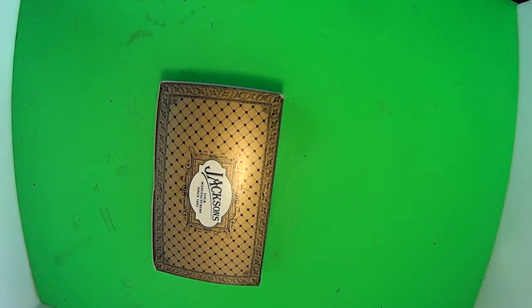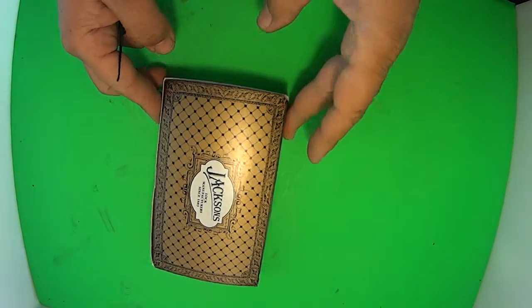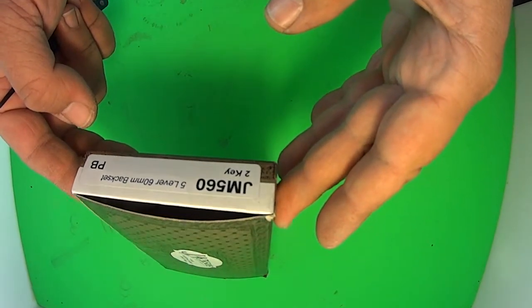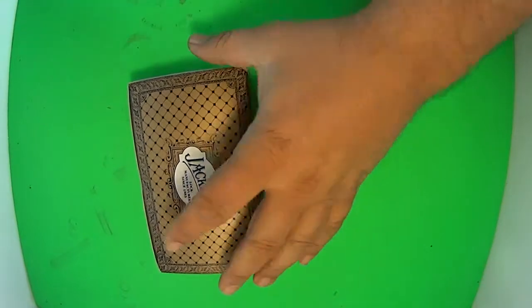Welcome to another video from Dr. Lock. We're going to have a look at the Jackson Mortise Lock, the JM 560 5 lever, 60mm backset, mortise lock.